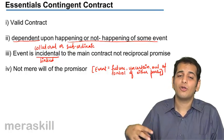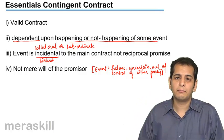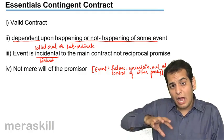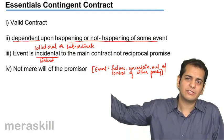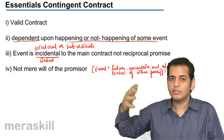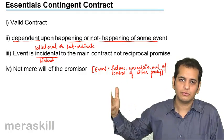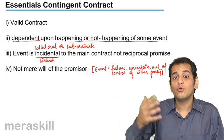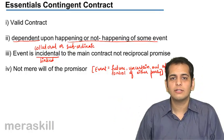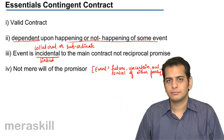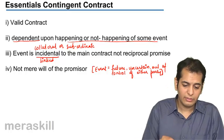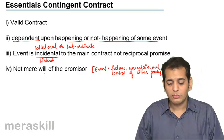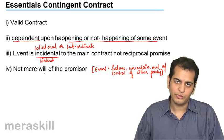The law says the contingent contract should not be based on the will of either party. It should be out of their control — something natural or not in their control. It should be uncertain; you should not know the result beforehand. So we say it should not depend on the mere will of the promiser.